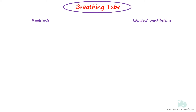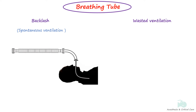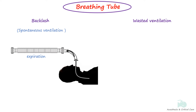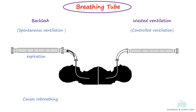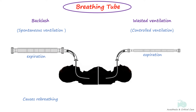Because the breathing tubes are distensible, two important phenomena occur when using them: backlash and wasted ventilation. Backlash is seen during spontaneous breathing where breathing tubes tend to collapse during inspiration and bulge during expiration, which may cause re-breathing. Wasted ventilation is seen during controlled breathing — the tubes tend to bulge on positive pressure breath (inspiration) and return to resting position on exhalation, resulting in less volume entering the patient than the one leaving the reservoir bag or ventilator.